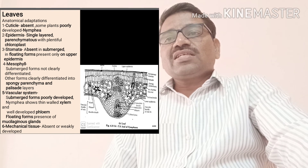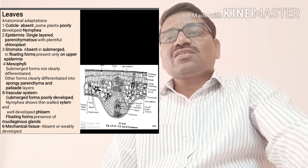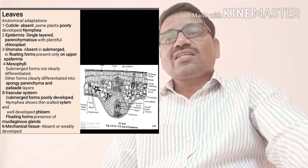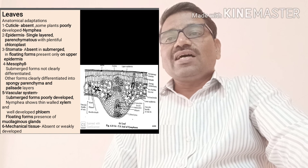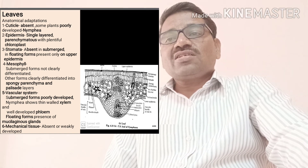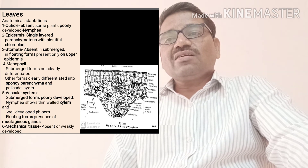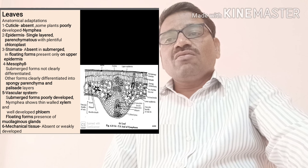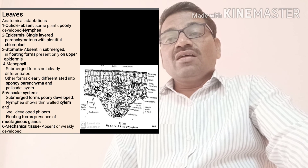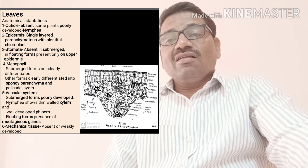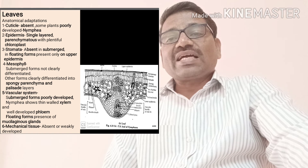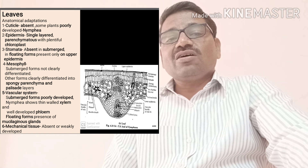The mesophyll region in submerged forms is not clearly differentiated, but in other forms it is clearly differentiated into spongy parenchyma and a palisade layer. The vascular system in submerged forms is poorly developed, but in Nymphaea it shows thin-walled xylem and well-developed phloem. In floating forms, there is a presence of mucilage glands. The mechanical tissue in the leaves of hydrophytes is absent or weakly developed.